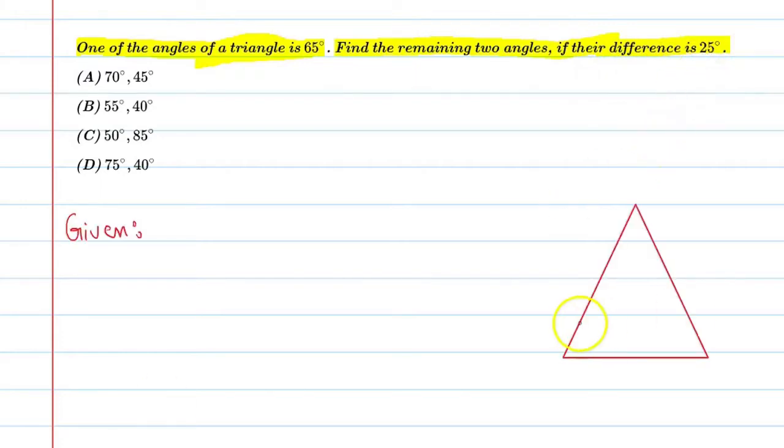So student, you can see that we have drawn a figure that is a triangle. You can see one angle that is 65 degrees which is given in the question and assume that this angle is x. So you can see here, one angle is